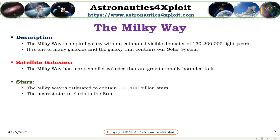The Milky Way has many smaller galaxies that are gravitationally bound to it. A galaxy is a gravitationally bound system of stars, stellar remnants, interstellar gas, dust, and dark matter. The Milky Way is estimated to contain about 100 to 400 billion stars. The nearest star to Earth is the Sun.